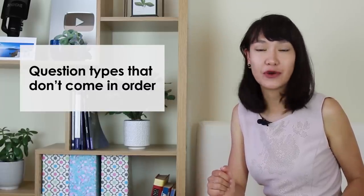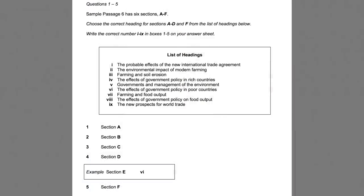Of course, there are questions which don't come in order. Typically, all matching questions such as matching headings. That's where the task is to choose the correct heading for each paragraph from the list of headings below. In this case, you should read the first paragraph, find the answer, read the second paragraph, find the answer, and so on. So you base your strategy on reading paragraphs one by one rather than reading questions and looking for the paragraph with the answer.